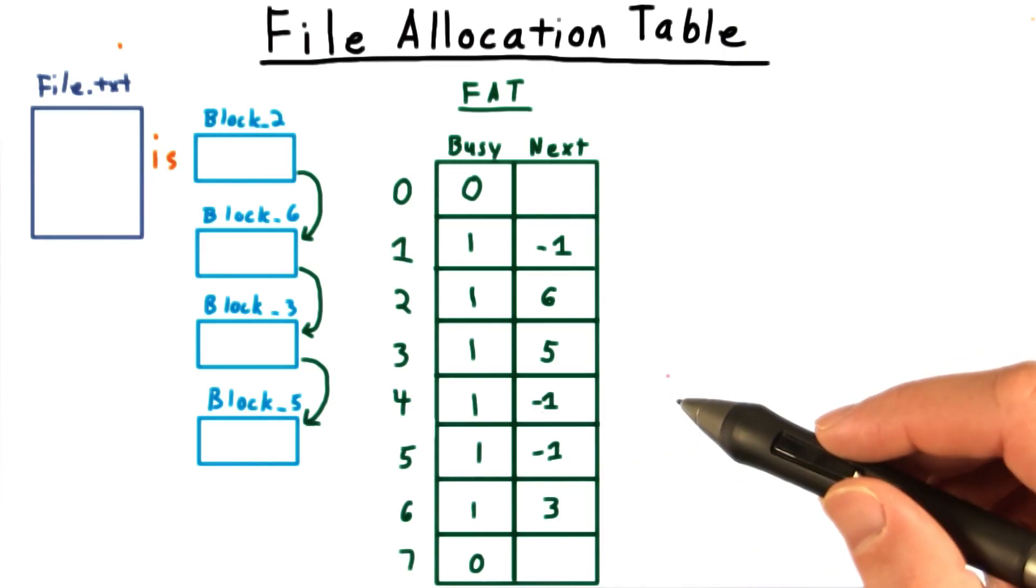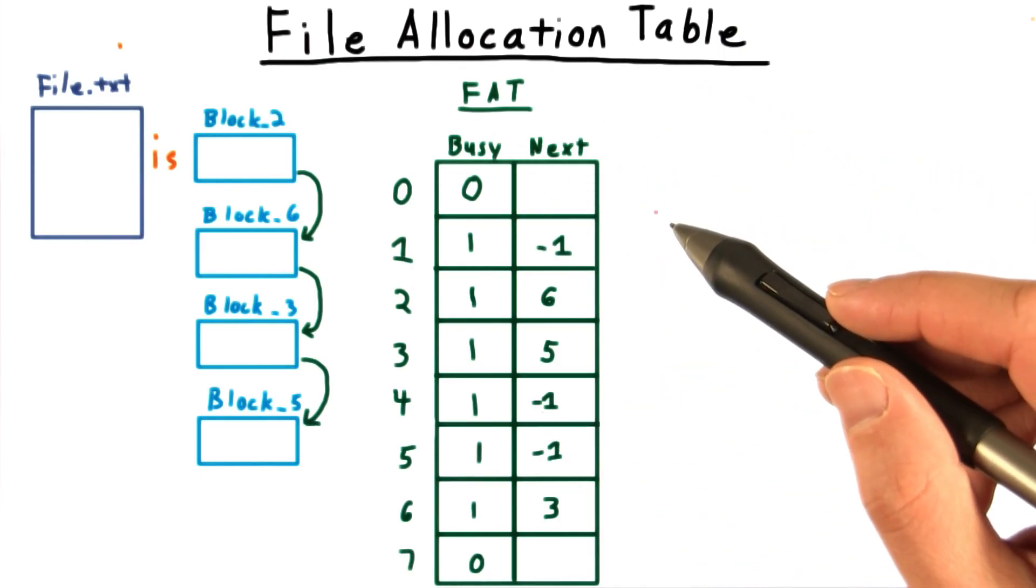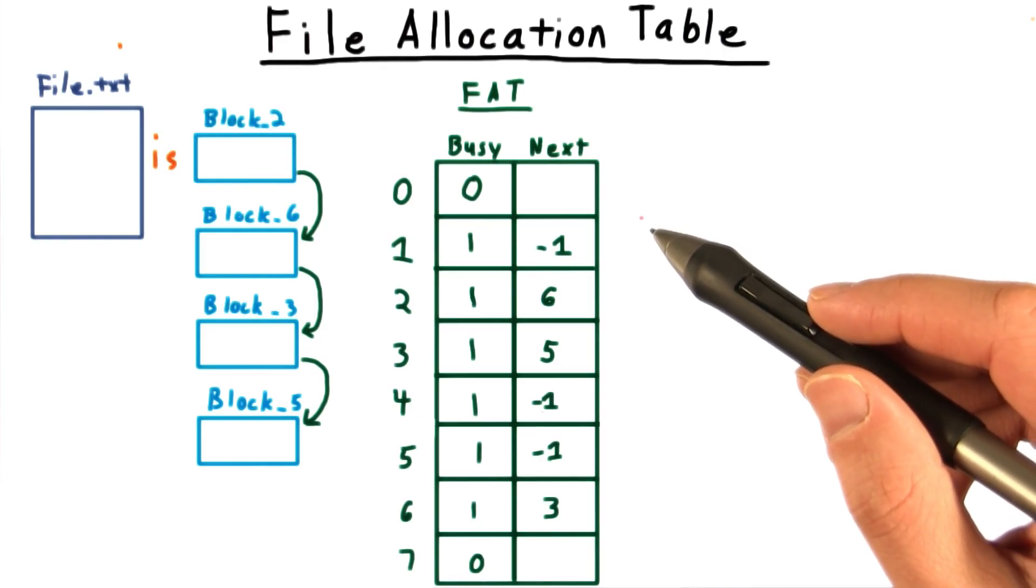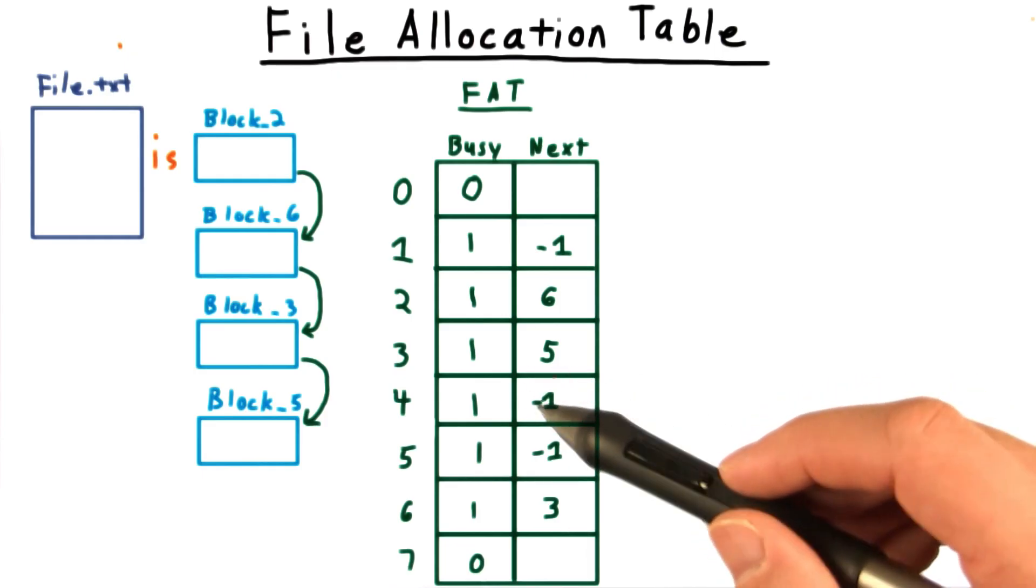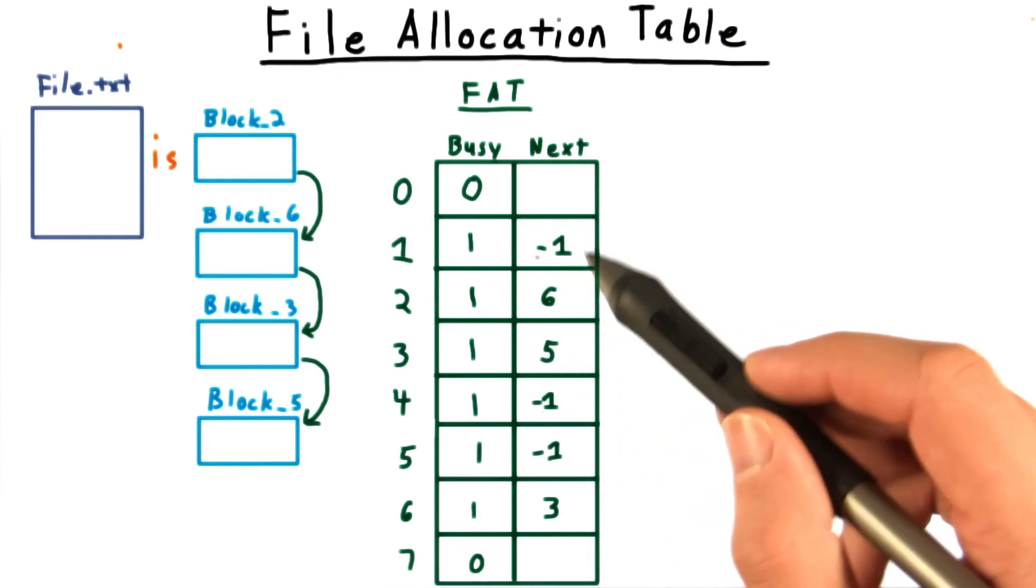It's important to realize that the file allocation table, or FAT for short, stores all the links for all the files. For instance, there appears to be another file occupying block 4, and only block 4, since that's the end, and also one occupying block 1.